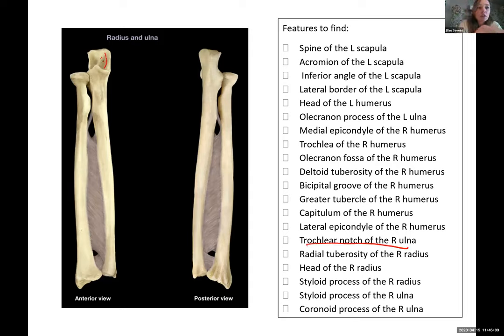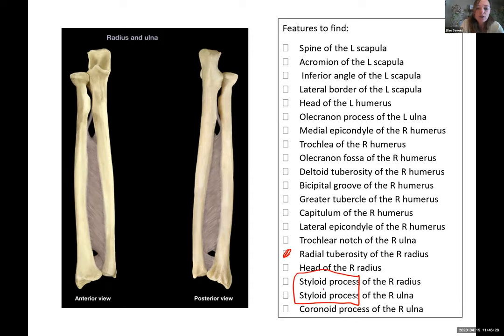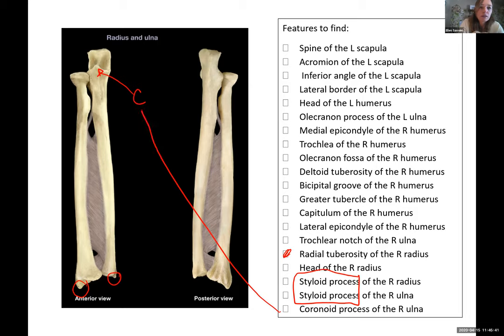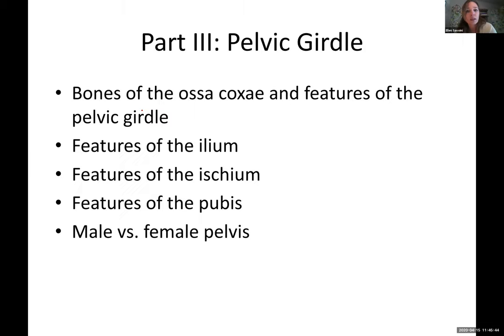Trochlear notch of the right ulna. Radial tuberosity of the right radius is this part. Head of the right radius there. Then we go down to the bottom — there's both a styloid process: the styloid process of the ulna and the styloid process of the radius. Then back up to the coronoid process of the ulna.